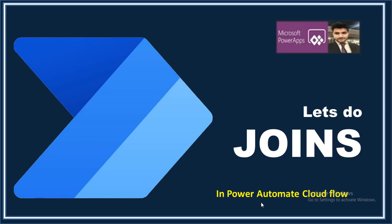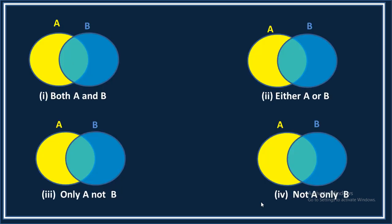Whenever we need to compare elements of multiple arrays, the first thing that comes to mind is joins — we have already seen this concept inside SQL. We possibly have four different types of joins: elements that belong to both A and B, elements that belong to either A or B, elements that belong only to A but not B, and elements that belong only to B but not A.